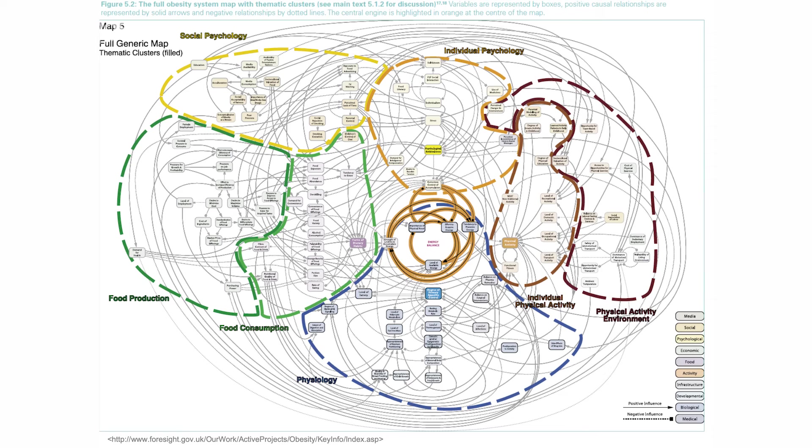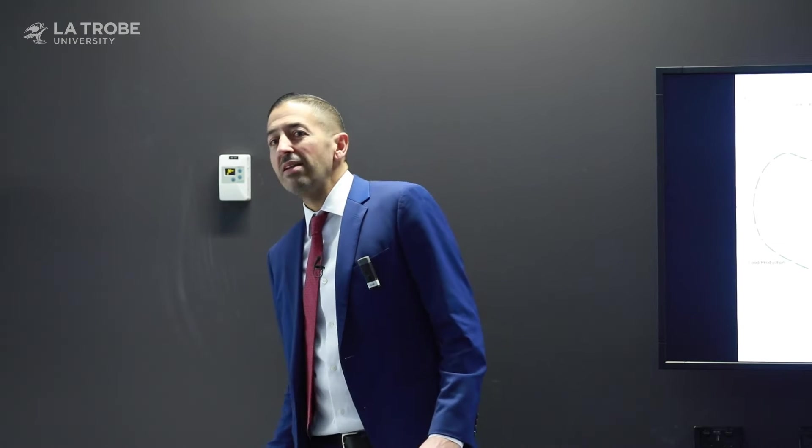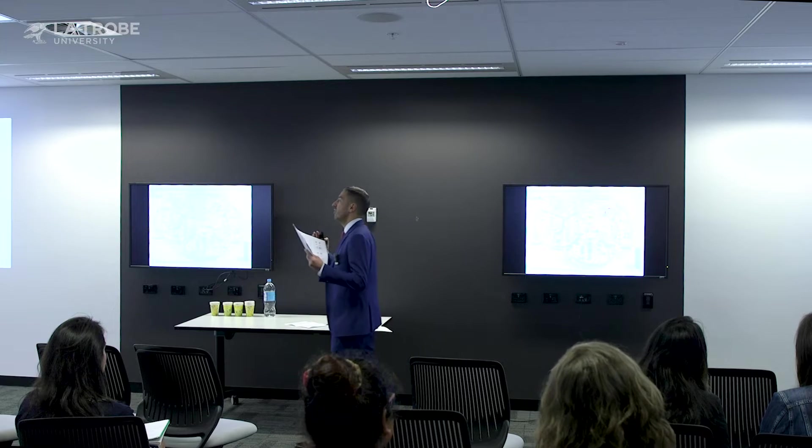Once you understand that time, place, and context intersect with and influence the health of populations, you realize that thinking about populations in a reductionist, simplistic way is not good enough — frankly, it never has been. Essentially all conditions, with the exception of very few rare genetically-determined conditions or single-infectious-disease conditions, are complex. Their determination looks like this: the Foresight model for obesity from the UK. At some level this is despairing — how can we ever understand all this? I am not saying we should throw everything in as complex a way as possible. I'm simply framing that this is a rational way to understand the production of health.